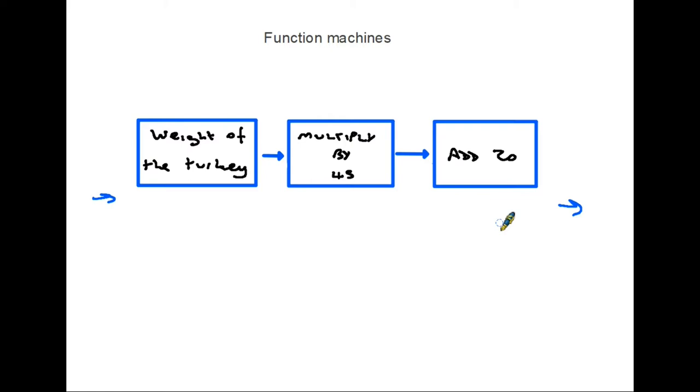And what does the first box say? It says weight of turkey. So we know that the turkey we were using was three kilograms. We take that and we go to the next box. And the instruction is in there, multiplied by 45. If you remember, it was 45 minutes per kilogram. So three times 45 gives us the 135 minutes. We go to the next box because that's what the arrow tells us to do. And that tells us to add 20. And that way we end up with 155 minutes.